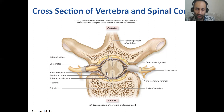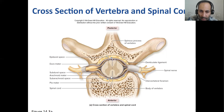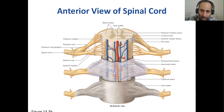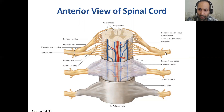The three layers of meninges are the dura mater, arachnoid mater, and pia mater. In the subarachnoid space is where you will have the CSF or cerebrospinal fluid. Here you can see the spinal cord with gray matter and white matter, the posterior and anterior rootlets, and all three meninges surrounding it.